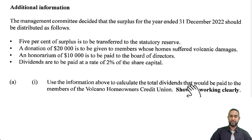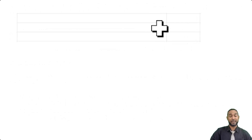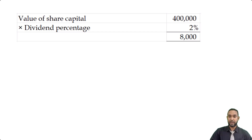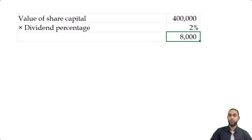The first thing they want is to calculate the total dividends that will be paid to the members of the credit union. That's straightforward — take the dividend rate of 2% and multiply it by the value of share capital. Value of share capital: $400,000 multiplied by 2% gives us the value of the dividend paid to the members of the Volcano Homeowners Credit Union — that's $8,000.